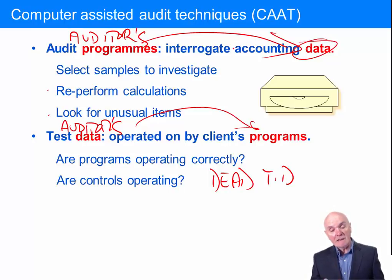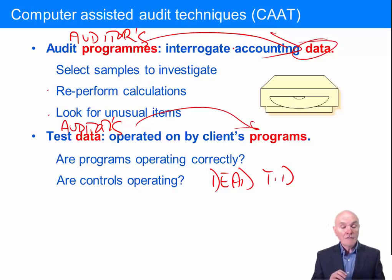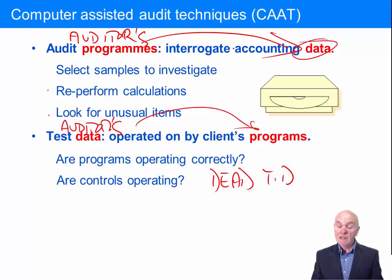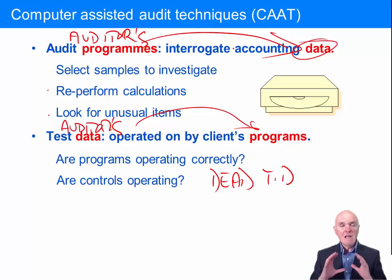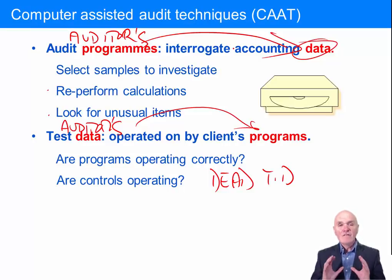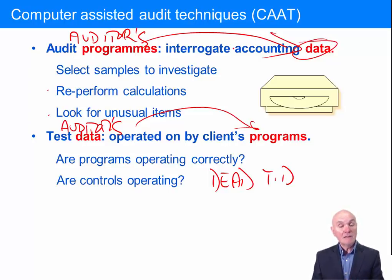Computer-assisted audit techniques tend to be a little expensive in the first year — you have to amend your programmes so they will read the particular patterns of data that the client is holding, and you have to think very carefully about the test data and go to the bother of getting copies of the systems and so on. So it's a little bit expensive in the first year, but thereafter it is fantastic. You get enormous amounts of audit information and audit testing done very, very quickly indeed — it's very efficient and very effective at not only examining data, but testing the operation of the client's programmes.